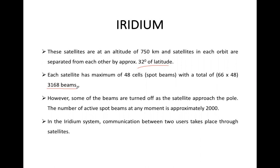However, some of the beams are turned off as the satellite approaches the pole. So nearly 2,000 beams are activated at any given point.